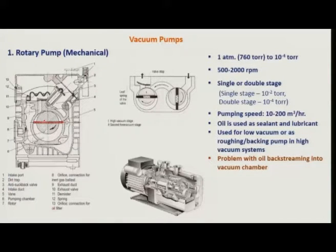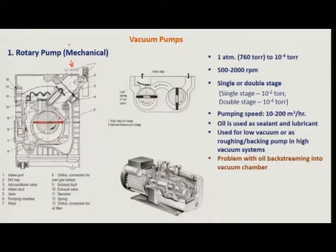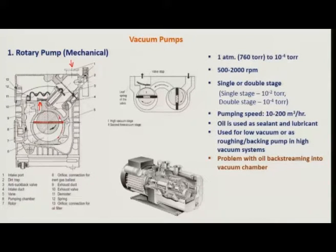When this drum moves in the clockwise direction, this area increases because the vane is always in contact with the outer wall. There is an inlet for gas from the vacuum chamber. The pump draws air or gas from the vacuum chamber, fills this expanding volume, then as it continues rotating, it compresses the gas and pushes it out. There is a diaphragm and oil fill so that gas can only be pushed out and cannot come back in.